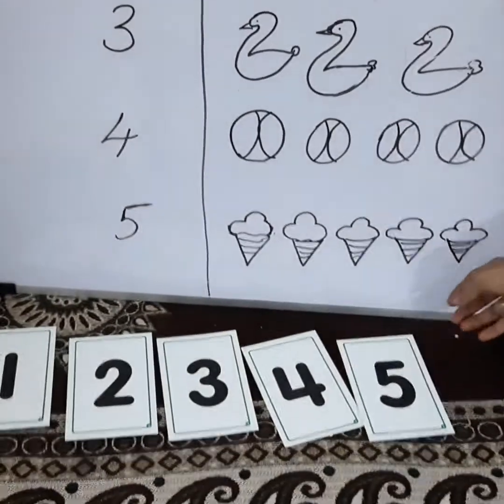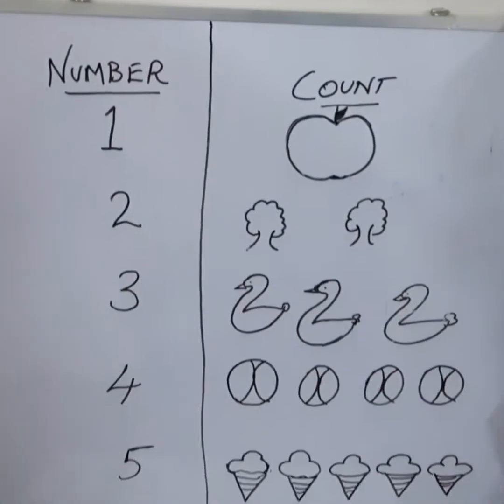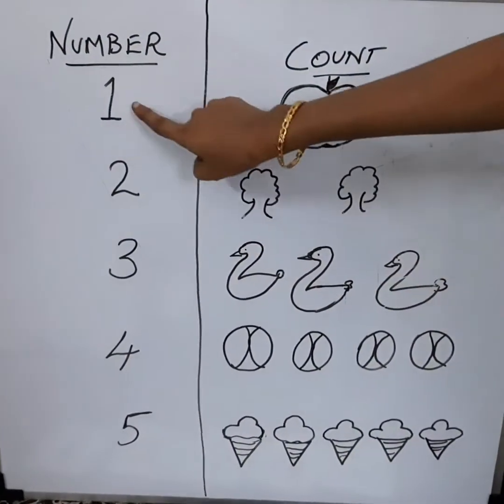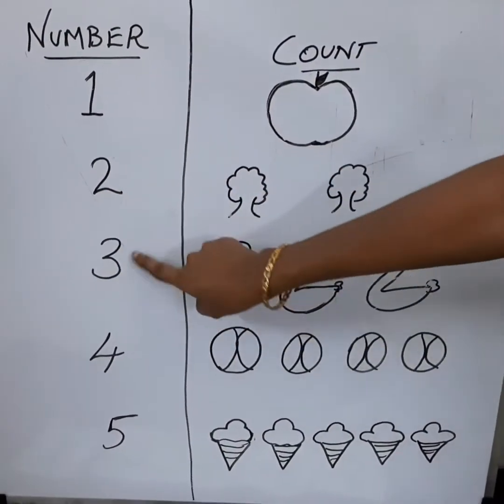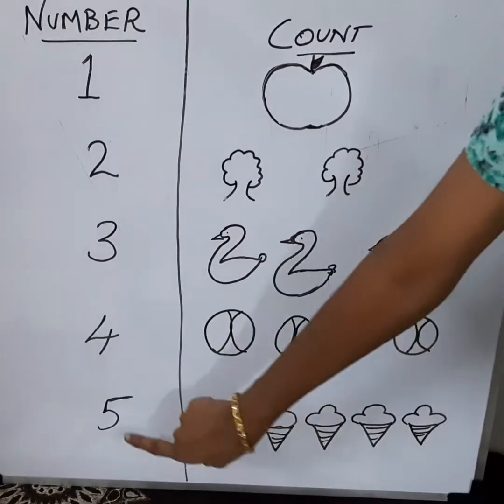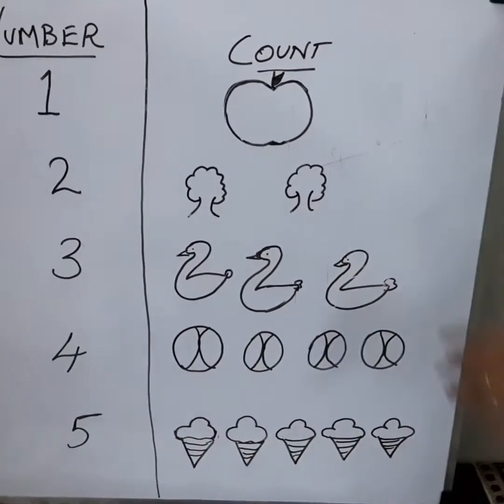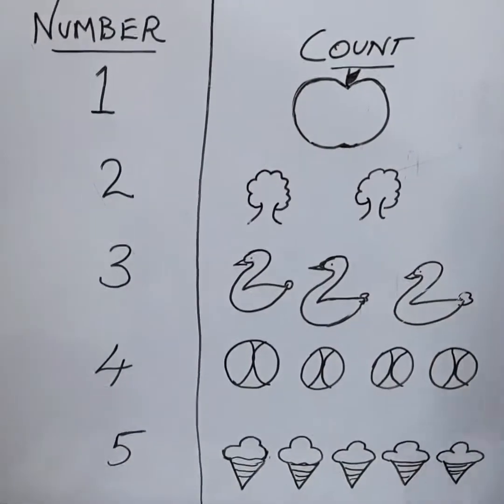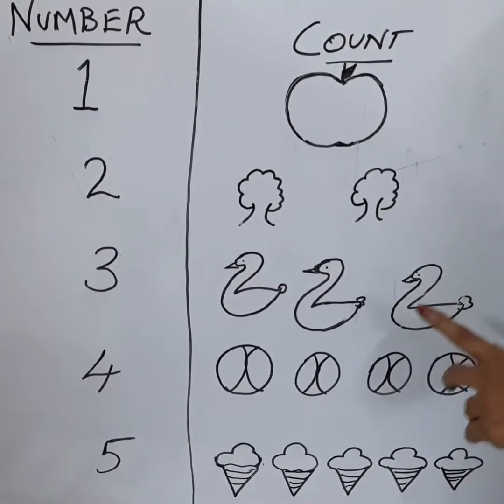Shall we see one more example? See? See the board here? Yes! It is written 1, 2, 3, 4 and 5. Now, we have many things here. Something is drawn here. We will see what it is.